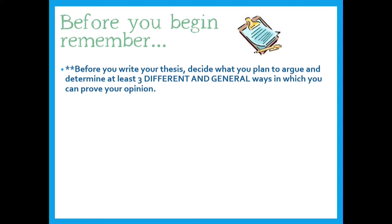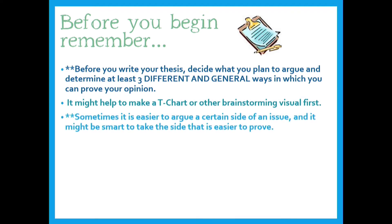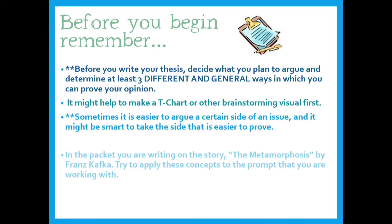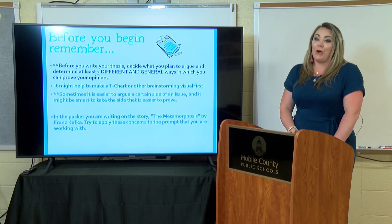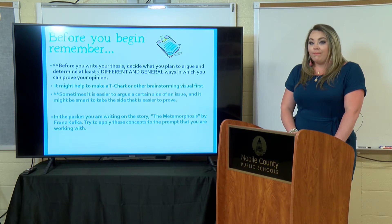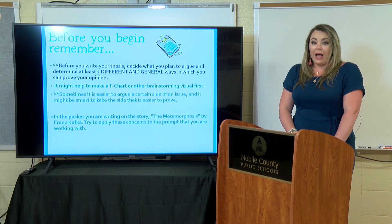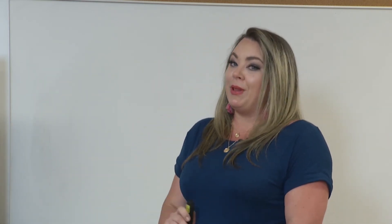It might help to make a T-chart or other brainstorming visuals first. Sometimes it's easier to argue a certain side of an issue, and it might be smart to take the side that is easier to prove. You are going to be writing about The Metamorphosis by Franz Kafka in your packet — apply these concepts to the prompt you are working with. Sometimes it is easier to argue one side of a claim than another. If you don't feel very confident in argumentative writing right now, it might be easier to take the stance that's going to be easier to prove.